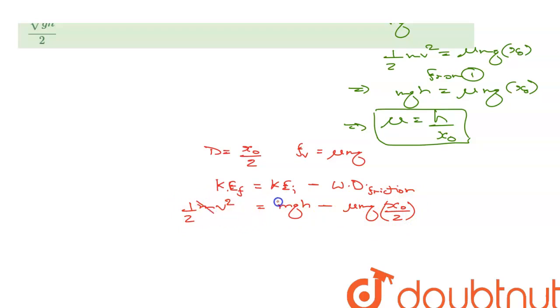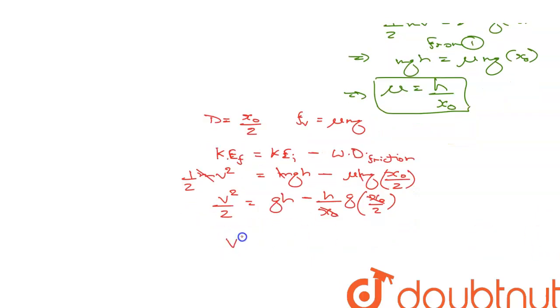So v squared by 2 is equal to gh minus—let's put the value of mu which is h by x0—h by x0 times g times x0 by 2. So x0 and x0 get cancelled. V squared by 2 is equal to gh minus gh by 2.